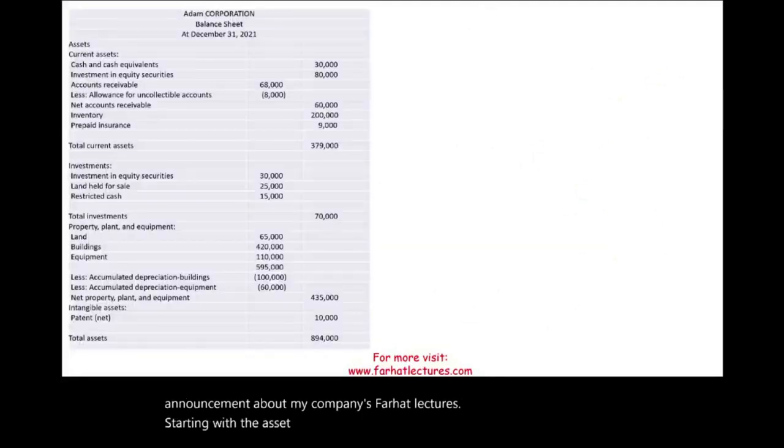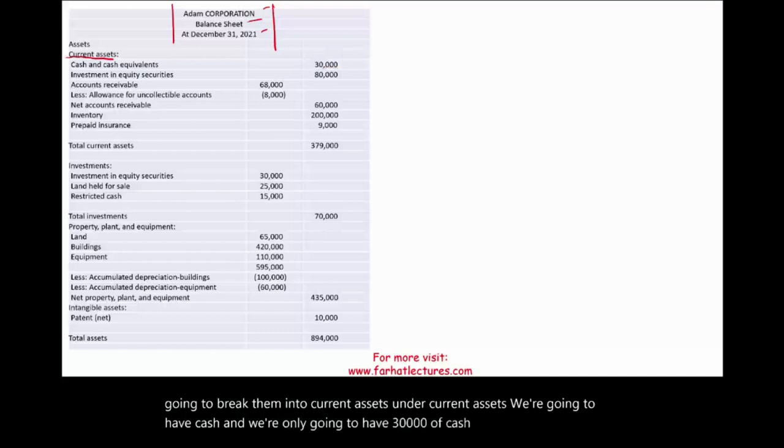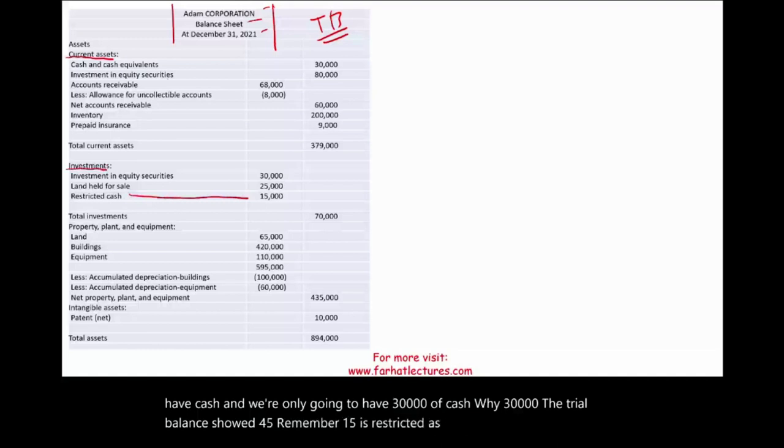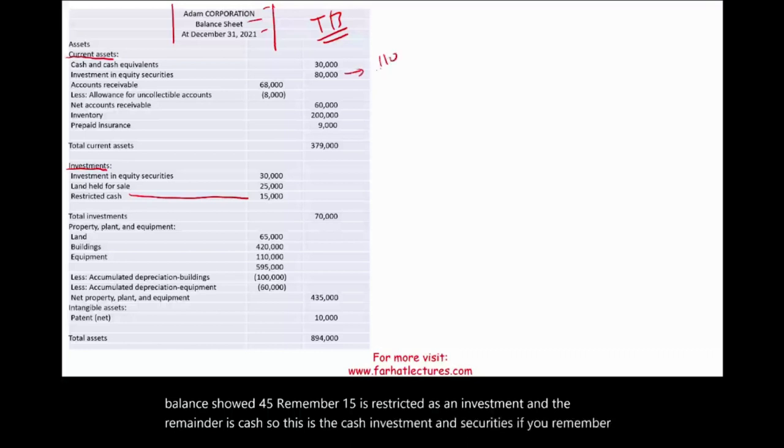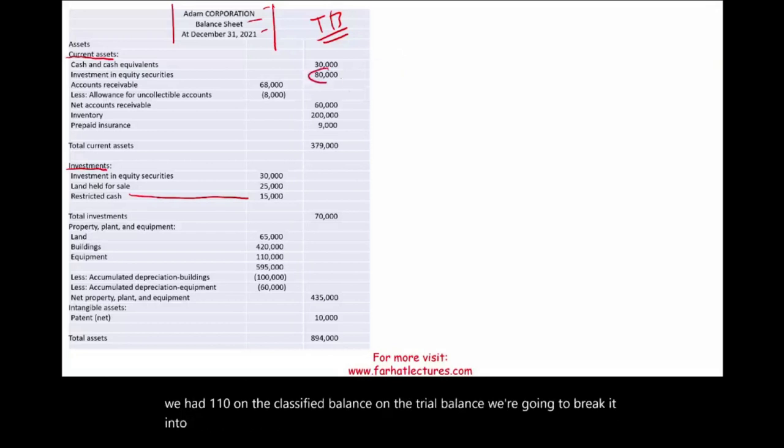Starting with the asset side and starting actually with the titles of the statement, the name of the company, Adam Corporation, the name of the statement, and the date. Then we're going to start with assets. Remember, four assets, and specifically, we're going to break them into current assets. Under current assets, we're going to have cash, and we're only going to have $30,000 of cash. Why $30,000? The trial balance showed $45,000. Remember, $15,000 is restricted as an investment, and the remainder is cash. So this is the cash. Investment in securities. If you remember, we had $110,000 on the trial balance. We're going to break it into $80,000 is considered current asset because it's going to be sold in the next 12 months, and $30,000 is under investment.